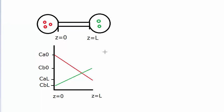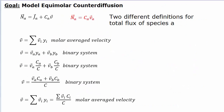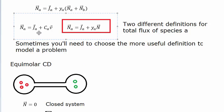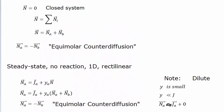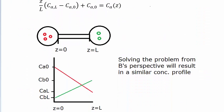Key point: solving the problem from B's perspective results in a similar concentration profile as with A. Remember this new definition we have for total flux. When starting a problem, you can choose between the two definitions, and equimolar counterdiffusion allows us to exploit that definition to get back to the thin film diffusion result and solve the problem.